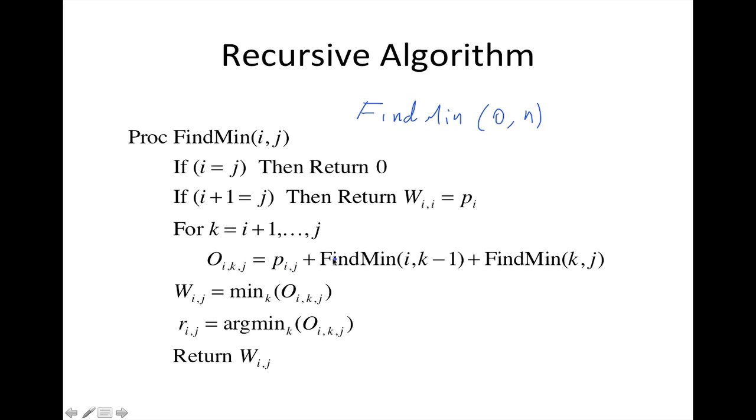For anything longer, we basically go through all possibilities of what might be the root. For each such choice, we sum the find min for the left subtree, the find min for the right subtree, and add to that pij.